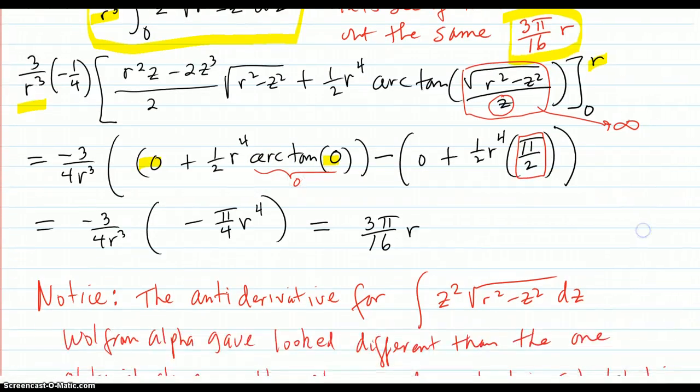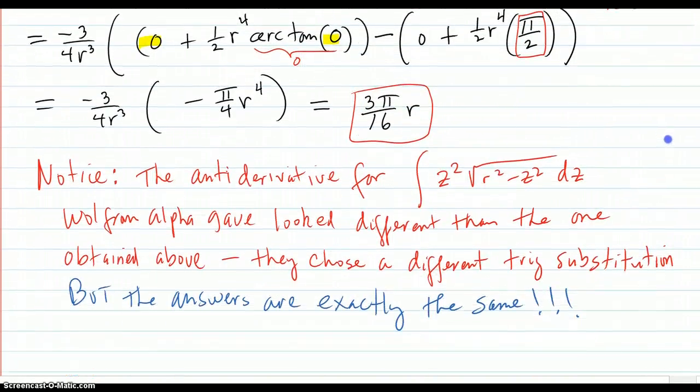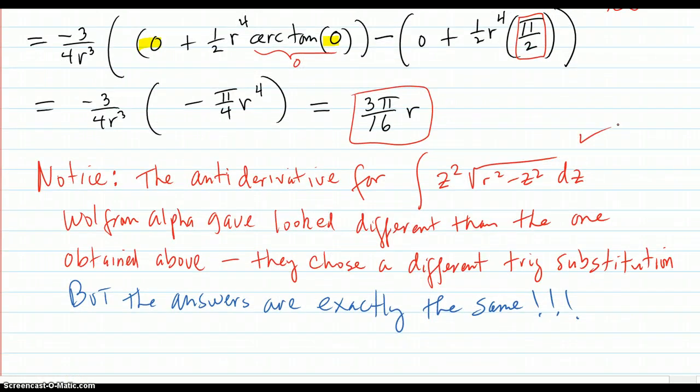Now you want to notice that the anti-derivative for what we worked out here is different than Wolfram Alpha gave. Which means that the routine inside Wolfram Alpha used a slightly different trig substitution approach to work it out with. I mean, who knows what went on in that computer brain of theirs. So, but the final result was exactly the same. So you don't have to worry about that it looked a little different. Came out exactly the same.